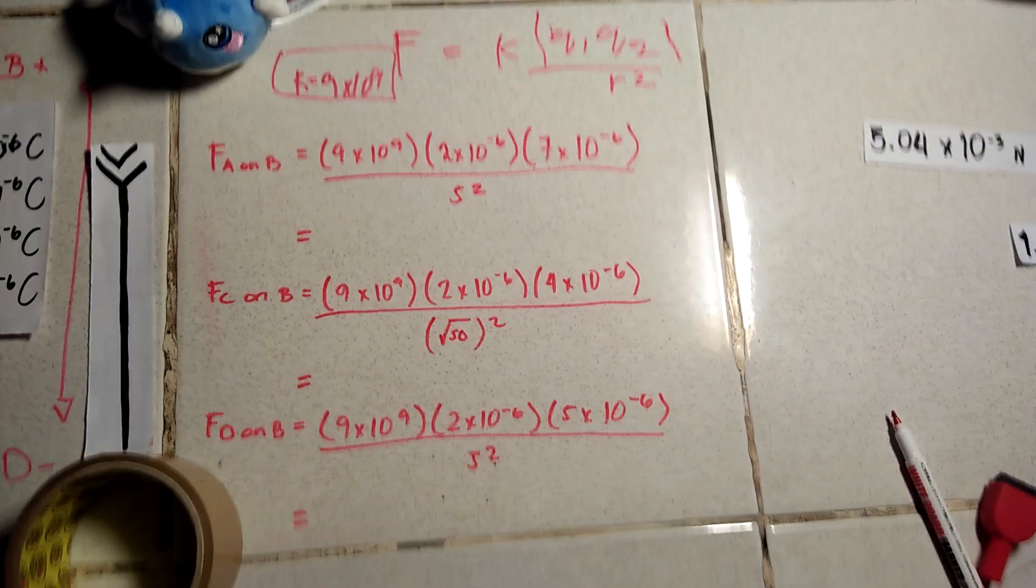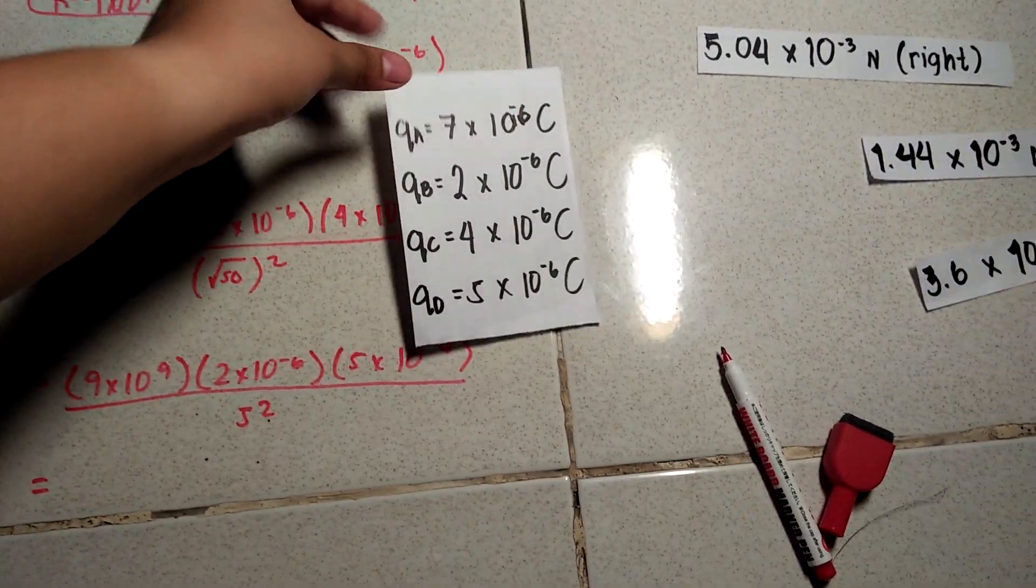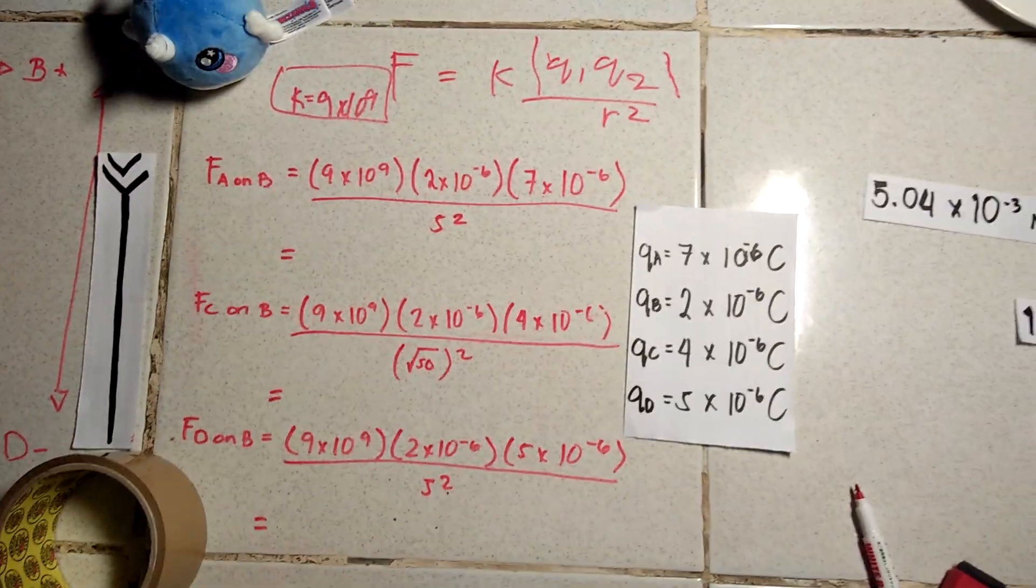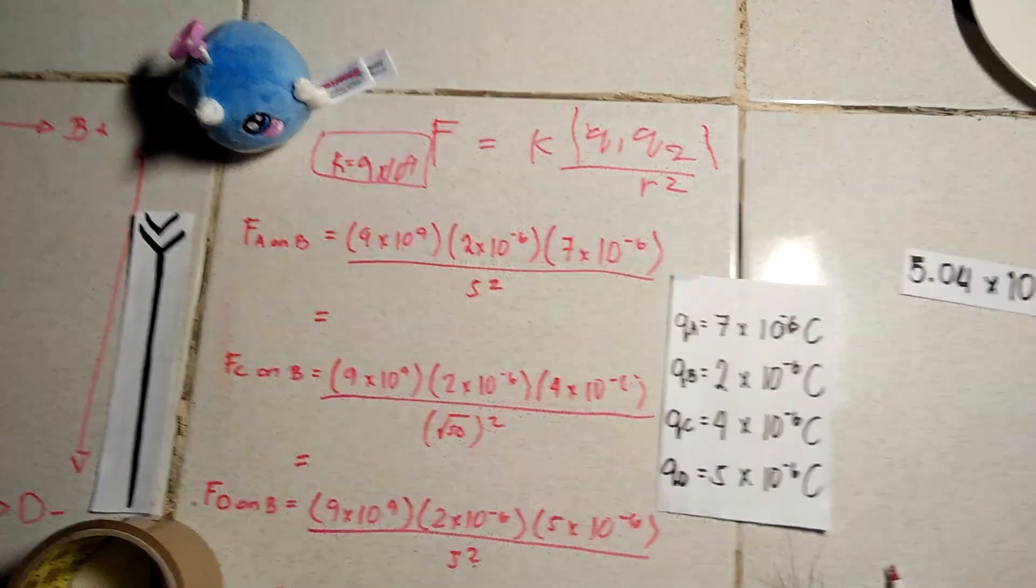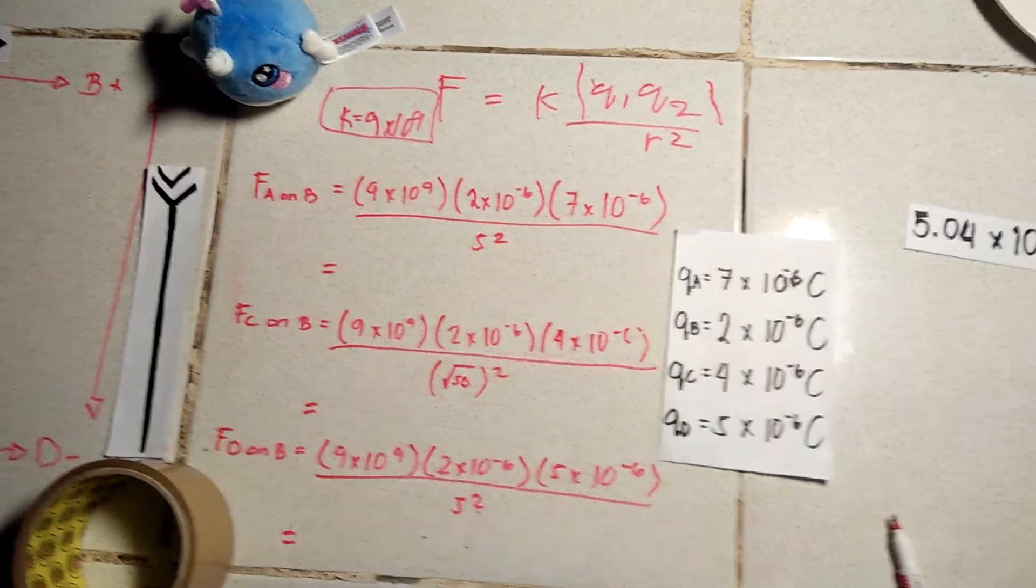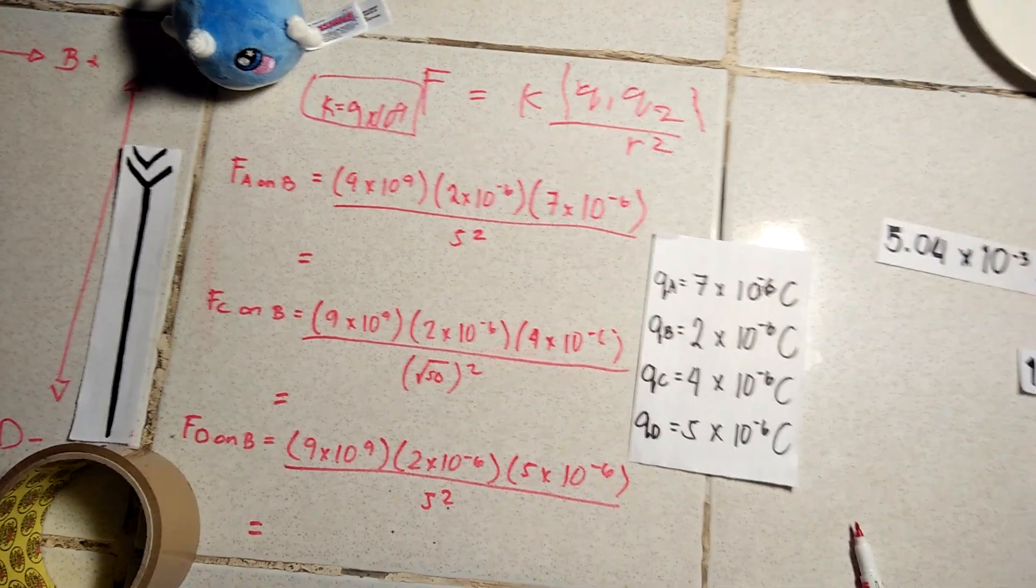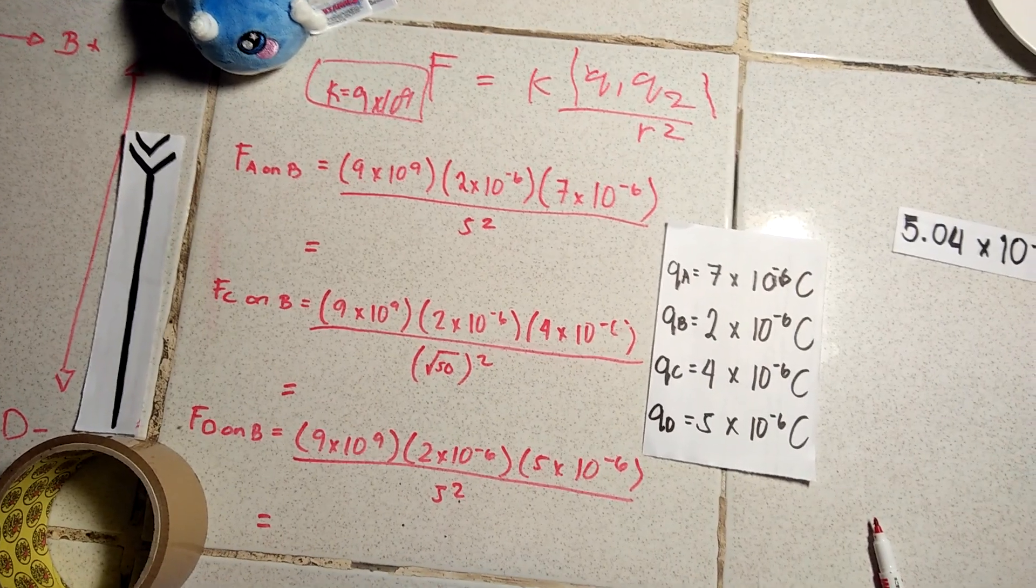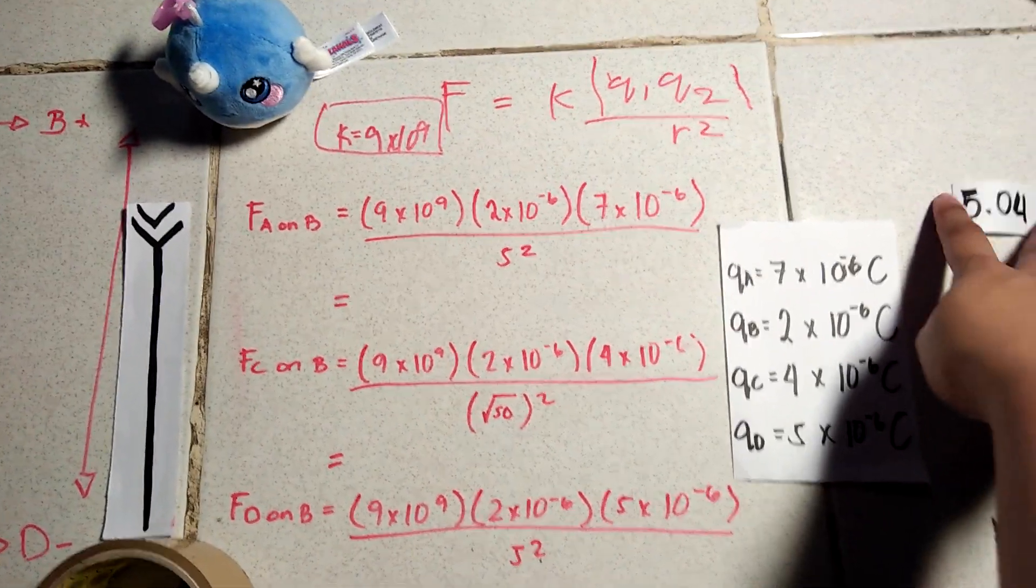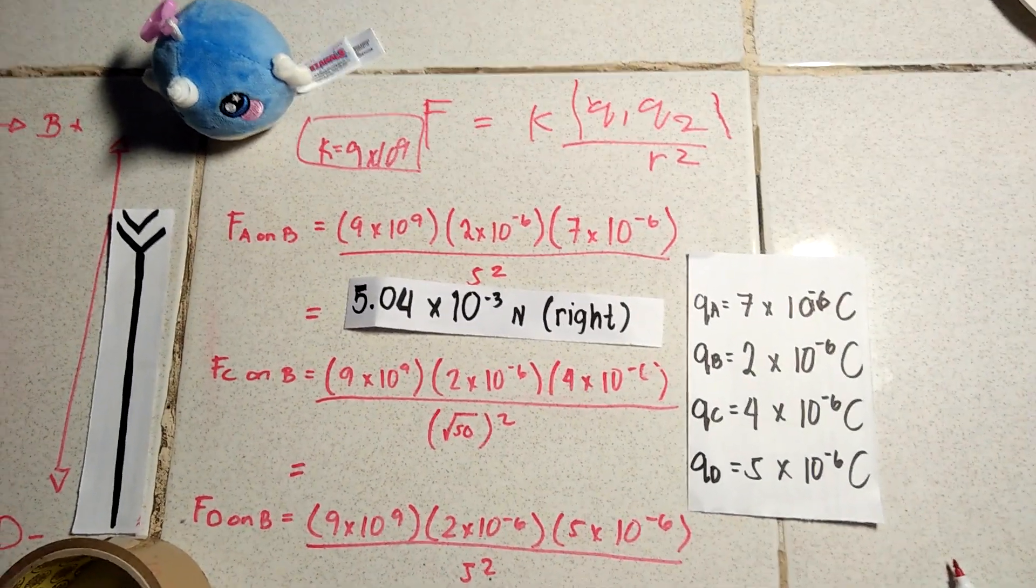So knowing that, we can solve for the following forces. First, we're going to solve for the force of A on B. Now that's 9 times 10 to the 9. And then here, 2 times 10 to the negative 6 is the value of qB. That's A on B. And then 7 times 10 to the negative 6, that's the charge of A. So for that, once you solve all that in the calculator, you get an answer of 5.4 times 10 to the negative 3 on the right direction.